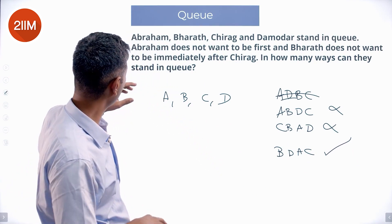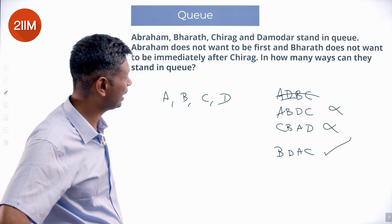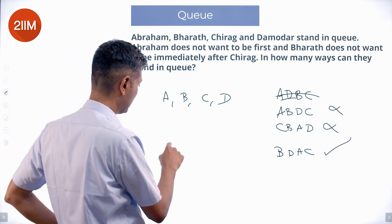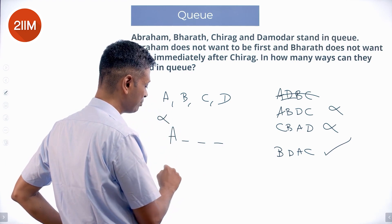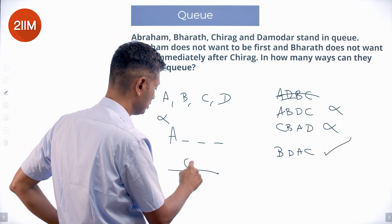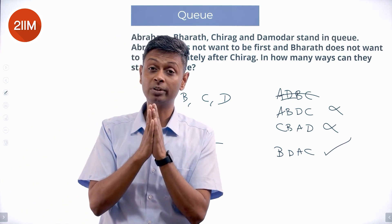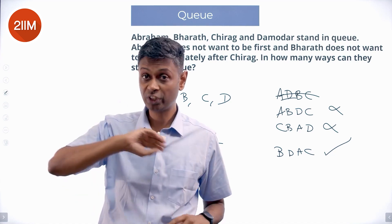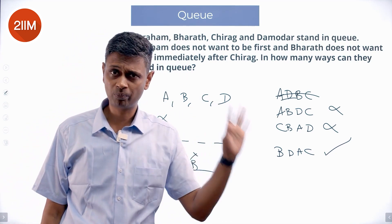So we cannot start with Abraham. Bharat does not want to be immediately after Chirag. So A dash dash dash, this is out. At any point of time, Bharat immediately after Chirag, C B, this is out. We cannot have a C B in the sequence, Bharat immediately after Chirag, we cannot afford to have that and we cannot start with A. Both of this we know.